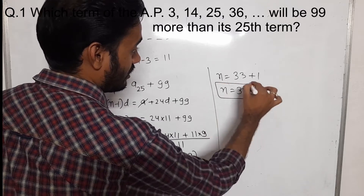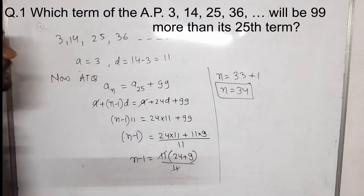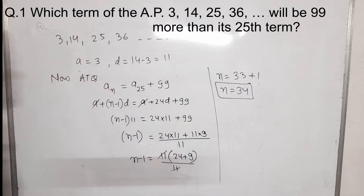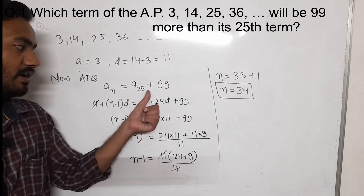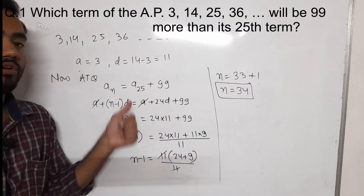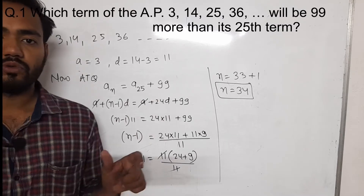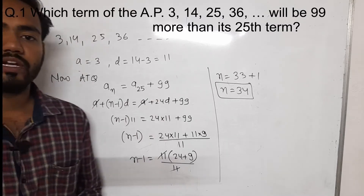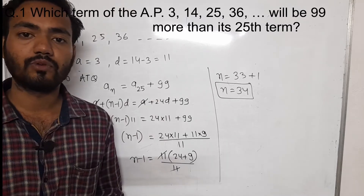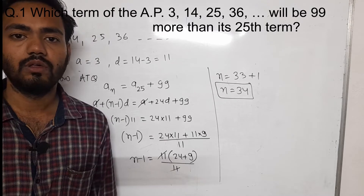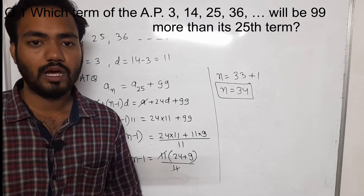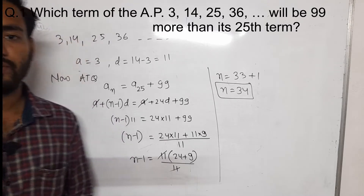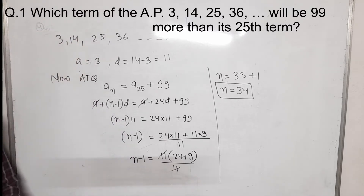So the 34th term of this AP will be 99 more than A25. You need to read the question carefully before solving it. You can take a screenshot.